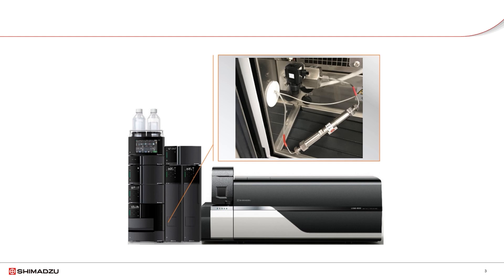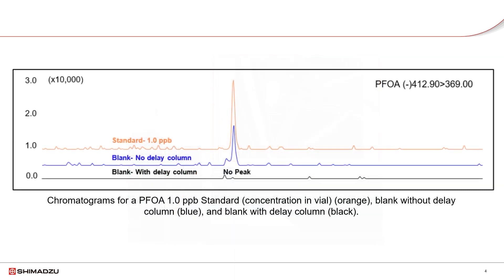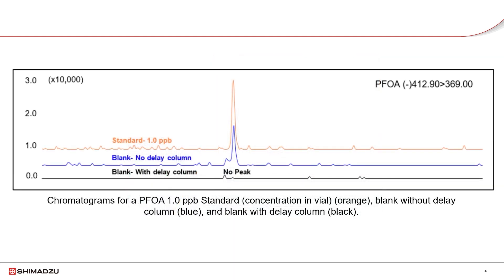The delay column is used in addition to the analytical column. The purpose of the delay column is to prolong dilution of any PFAS that are present in the LC system. Use of the delay column is essential to successful PFAS detection and quantification.